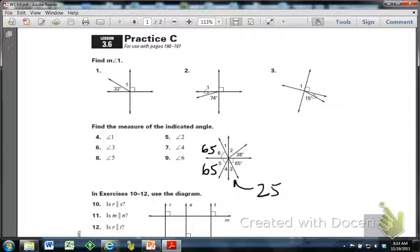And then I'm going to also know that angle 4 is going to be part of angle 5 plus 4 plus 3 plus 65 equals 180. So angle 4 has to be 25 also.